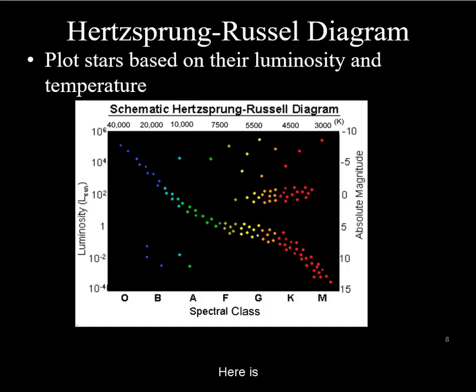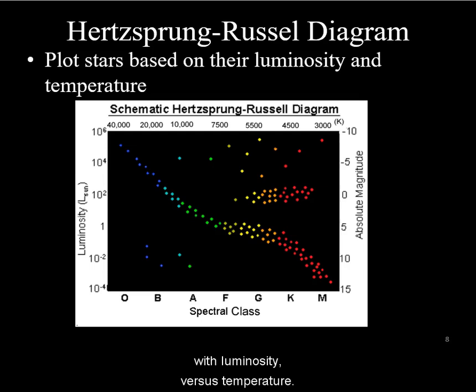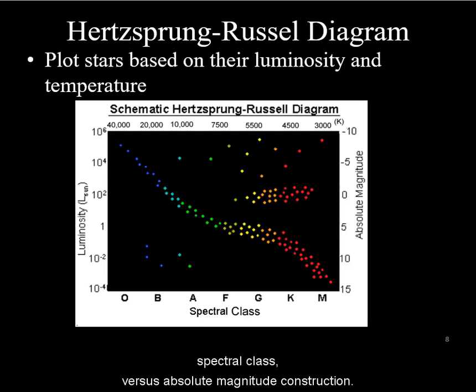Here is a quick overview of the Hertzsprung-Russell diagram. It summarizes the properties of stars and is constructed with luminosity versus temperature. It is up to the reader to look up the more historic spectral class versus absolute magnitude construction.